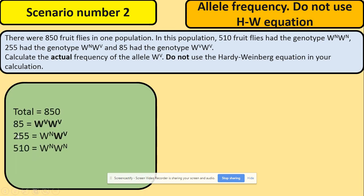So how to do it? Firstly write down everything what you know. Then highlight your frequencies, the allele W^V that they are looking for. So we've got it here within 85 and we've got it in there.